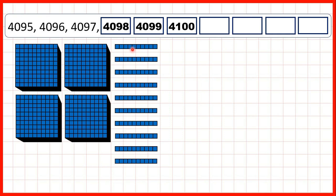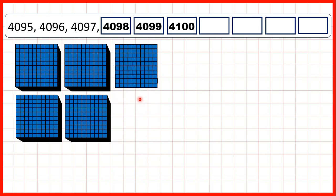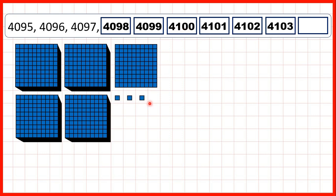So now we've got 10 tens, but we can exchange 10 tens for 100. So that's why one more than 4099 is 4100, and then we can keep on adding ones until we get to 4104.